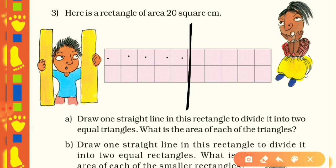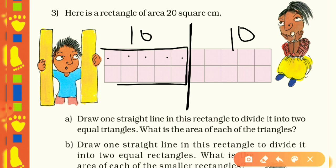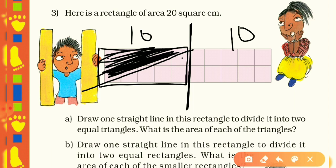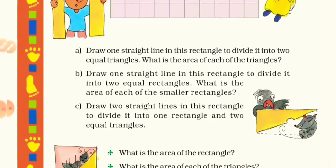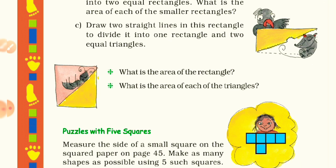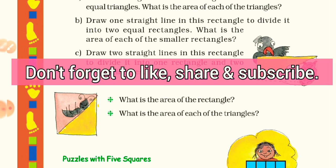For Part C, the rectangle formed is half of the whole rectangle, so its area is 10 square centimeters. Then draw another line through that rectangle to create two triangles, each being half of that 10 sq cm rectangle — so each triangle has area 5 square centimeters. The area of the rectangle is 10 square centimeters and the area of each triangle is 5 square centimeters. That's all for today's class, my dear students!